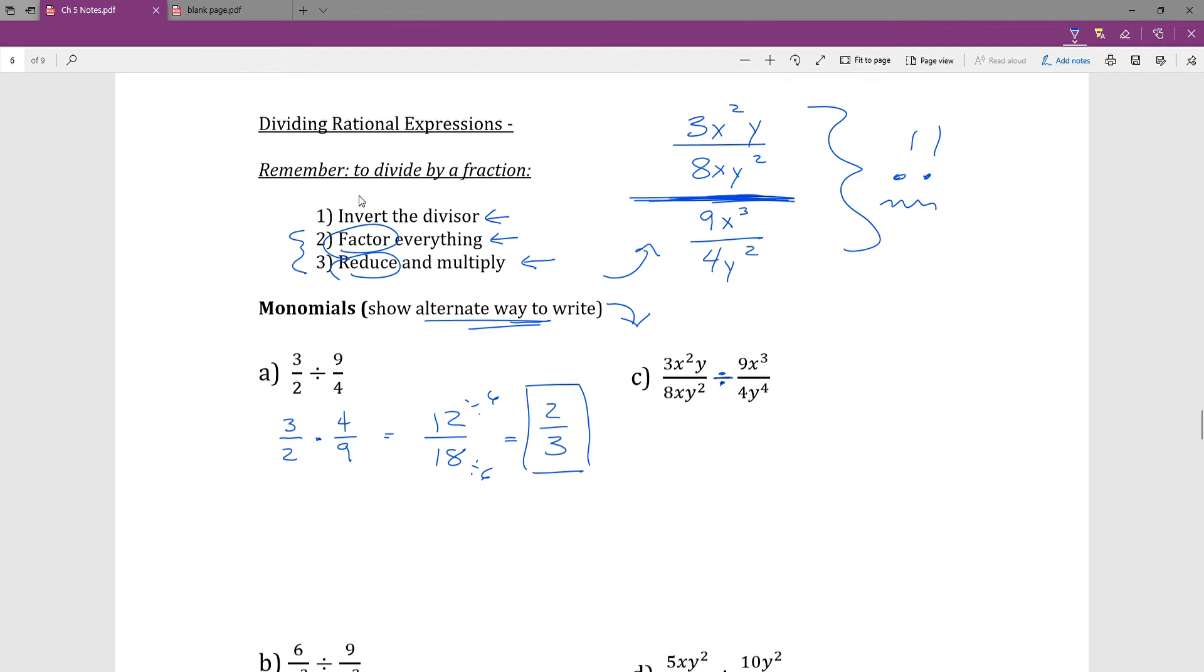So c, I'm going to rewrite it so it is a multiplication question. If they are all monomials, I find students are usually happier multiplying across the top, multiplying across the bottom, and then simplifying. If you want to get in and cross things out, you sure can. But I'm going to try and streamline my instructions on this one for the most common thought process.